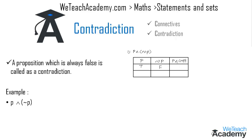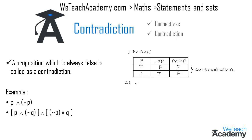If the truth value of p is true, then not p would be false, and hence p and not p would be false. If p is false, then not p would be true, and by using the definition of conjunction, p and not p would again be false. We observe that the last column contains only false values, so we call this type of statement a contradiction.